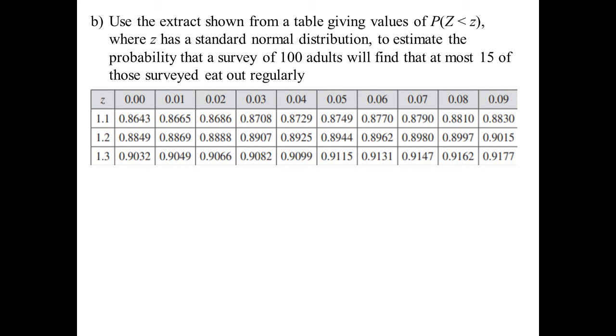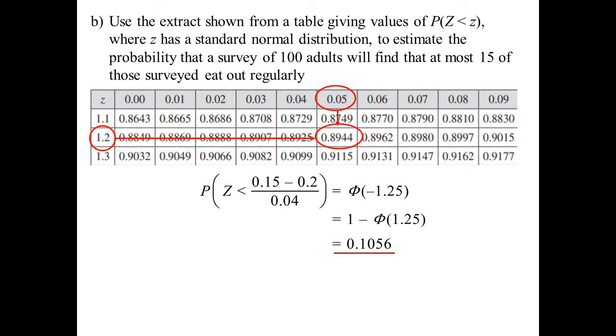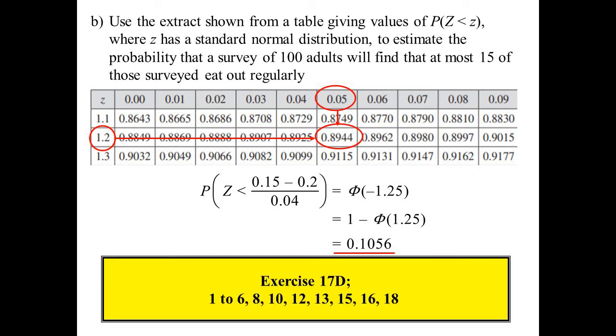They then said, using this table, we have to estimate the probability that a survey of 100 adults will find at most 15. So we're now saying the probability that Z is less than 0.15 minus 0.2 over 0.04. So the Z score. That turns out to be negative 1.25. Well, the table they gave us hasn't got the negatives. So we're going to have to play around with this. That would be the same as going 1 minus. And then we can look up the cumulative frequency of 1.25. So 1.25, I'll go along from 1.2 down from 0.05. And there's our answer, 0.8944. So subtract that from 1 and we get 0.1056. That, I guess, is more likely the sort of thing that they might ask.